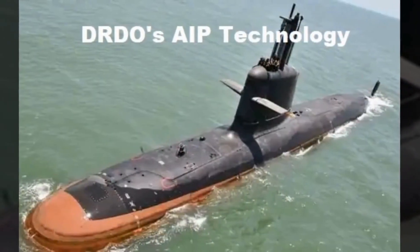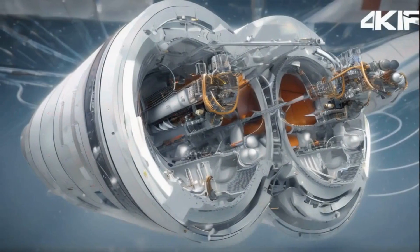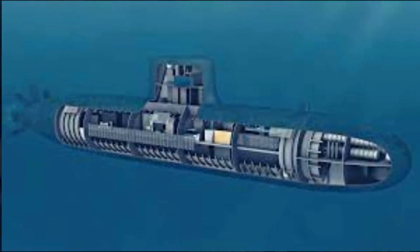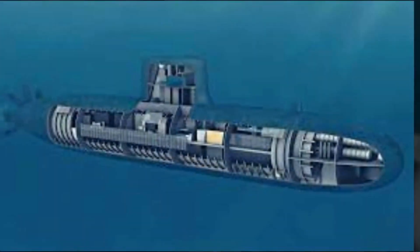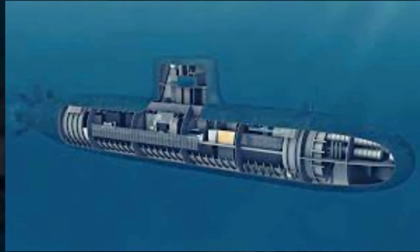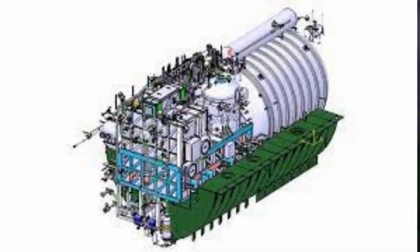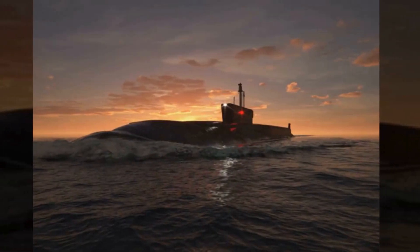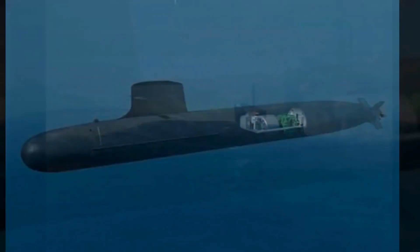Closed cycle diesel AIP. Closed cycle diesel AIP systems use a diesel engine to generate electricity, but they use a closed loop system that does not require atmospheric air. This type of AIP is relatively simple and inexpensive, but it is not as efficient as fuel cell AIP.